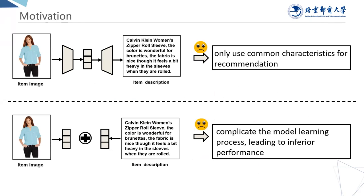As shown in the first figure, some works utilize encoder-decoder models to align the common characteristics between two modalities, while the modality specific characteristics are always neglected. This information loss inevitably decreases the recommendation performance. As shown in the second figure, some works fuse heterogeneous information of different modalities with simple operations like vector concatenation. However, this straightforward fusion approach encodes both modality common and modality specific features into a single vector representation, complicating the model learning process and leading to inferior performance.